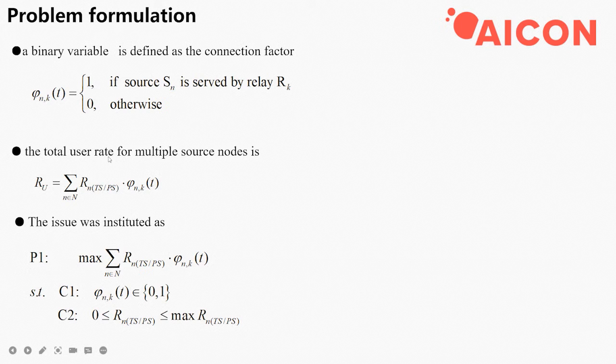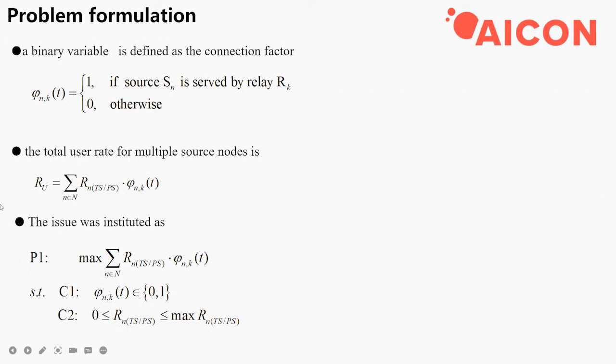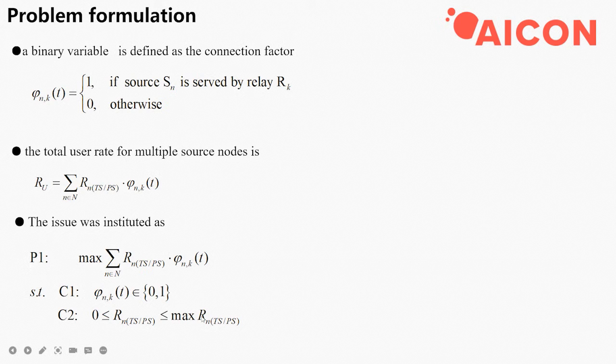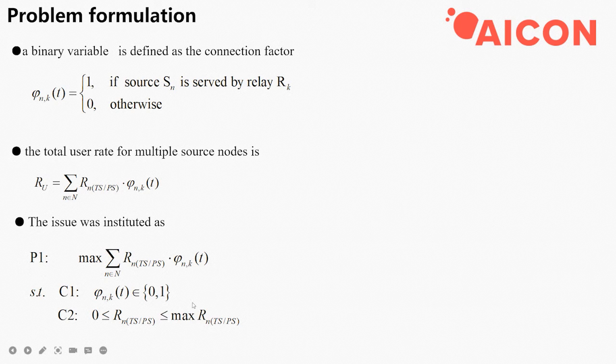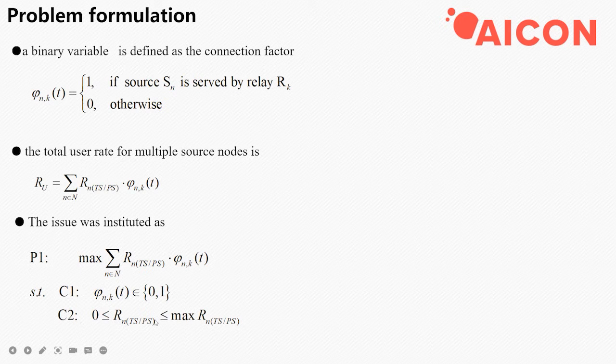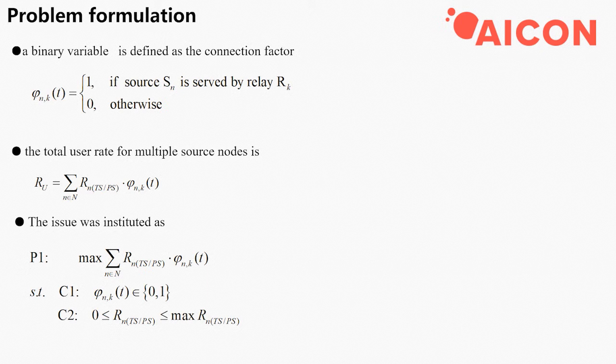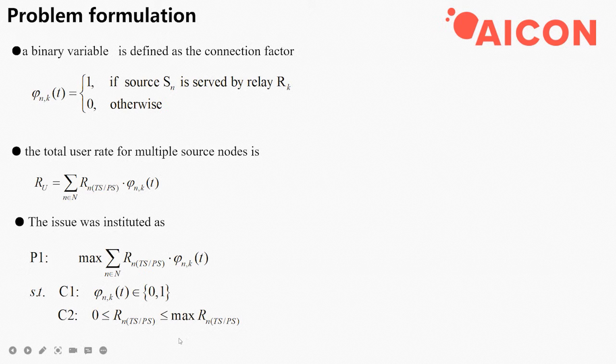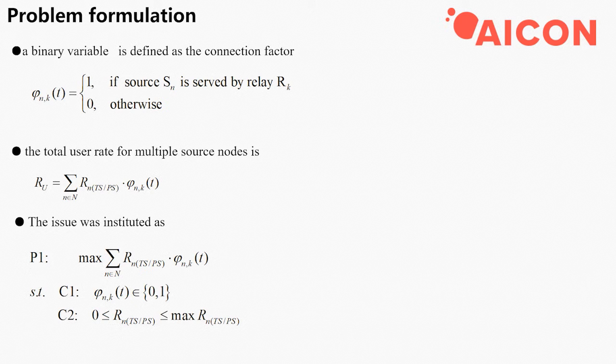A binary variable is defined as the connection factor phi_nkt. The total user rate for multiple source nodes is this, hence the issue was instituted as this, where condition 2 expresses the fact that there is actually an upper limit to the communication rate of each source node in order to satisfy the minimum energy harvesting request.